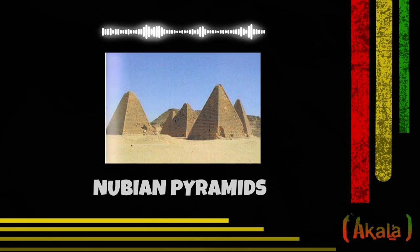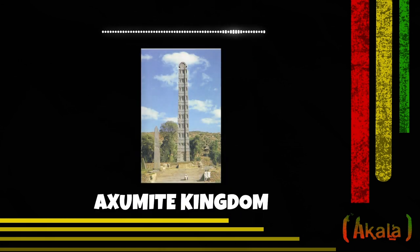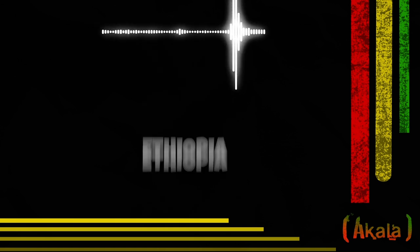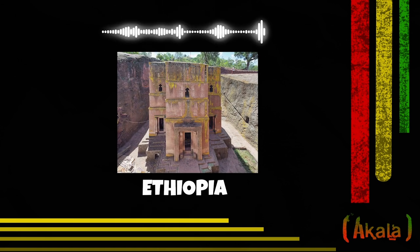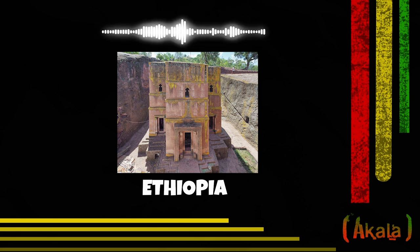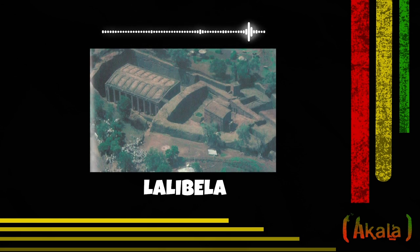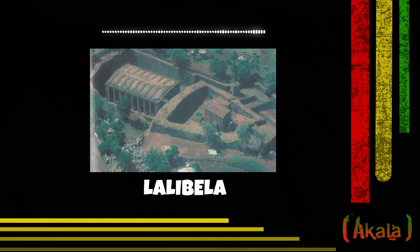You have the Aksumite kingdom in the country that is today Ethiopia. In Ethiopia you have a range of churches dating from the 12th century, and these are some of the most masterful building projects — though we can't even call them building. If you look at this church, Lalibela, for example, they didn't build upward; they dug down into the ground and carved the church out of a mountain. These 800-year-old churches, and this is what they look like inside.